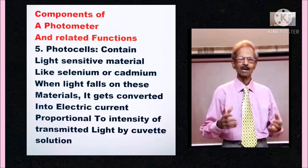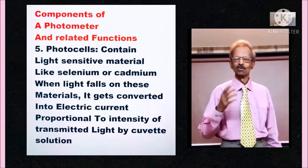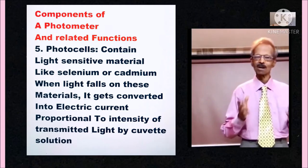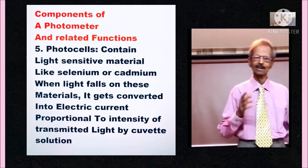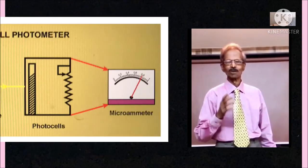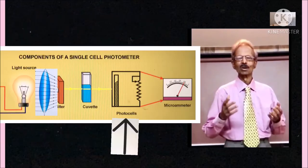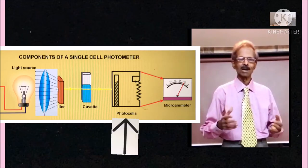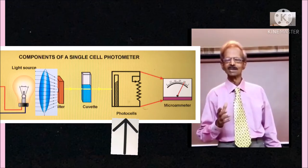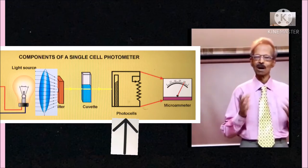Component 5: photocells. Photocells are made up of light sensitive material like selenium, cadmium or a phototube is used. When light transmitted by cuvette falls on photocells, light energy is converted into electrical energy which is directly proportional to the proportion of light.